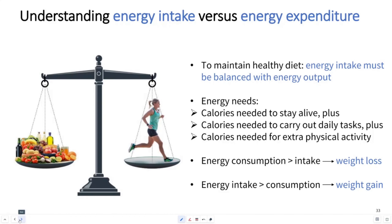Understanding energy intake versus energy expenditure is very key. The balance of a healthy diet is how much energy intake versus how much output of the energy. Energy needs include the calories required to stay alive, plus the calories needed to carry out daily activities and daily metabolic needs, and any extra calories for extra physical activity. In order to lose weight, you want to have greater expenditure than intake, therefore having a deficit in calories.